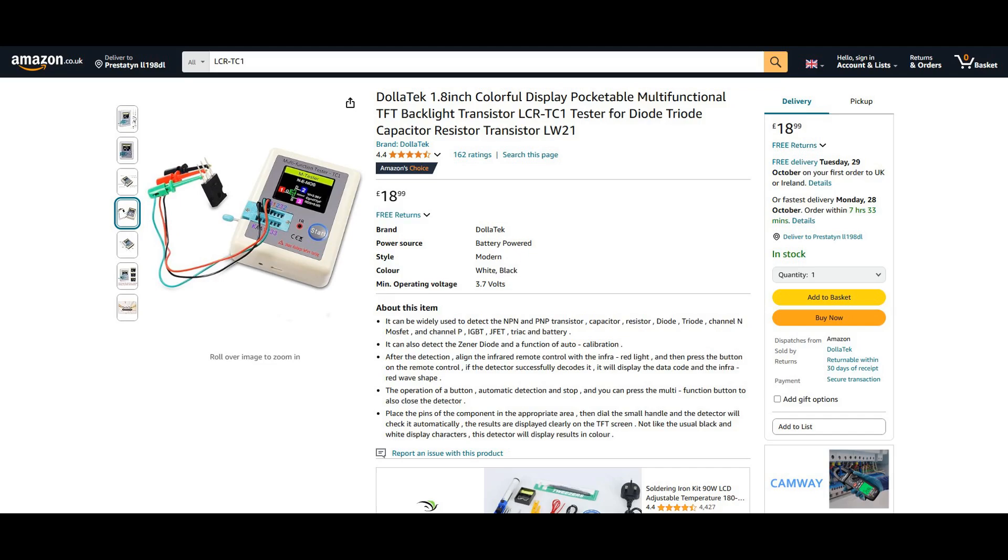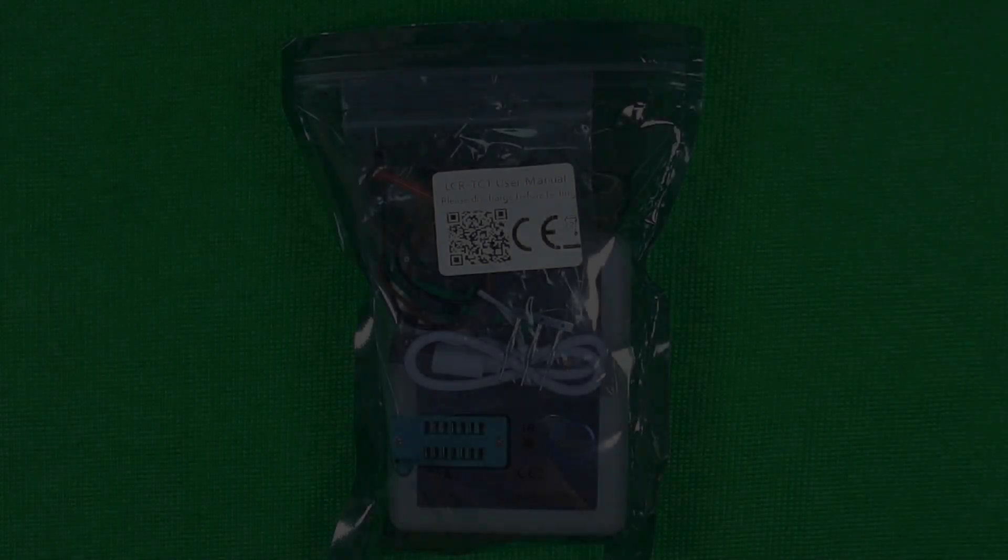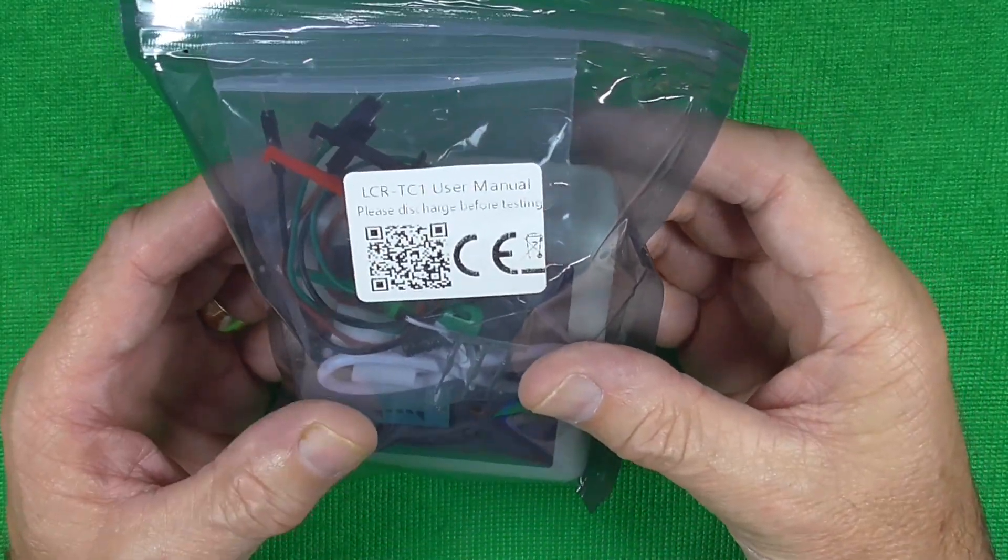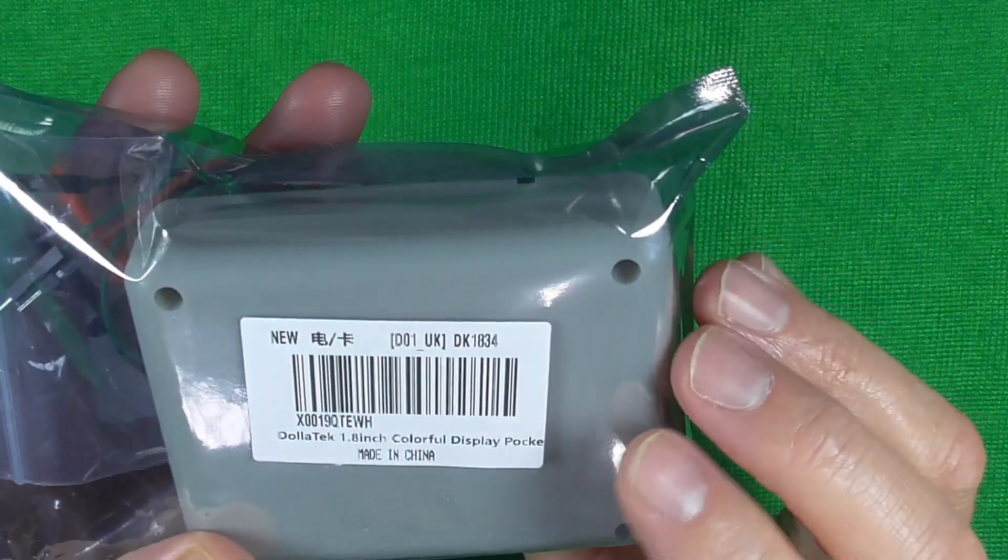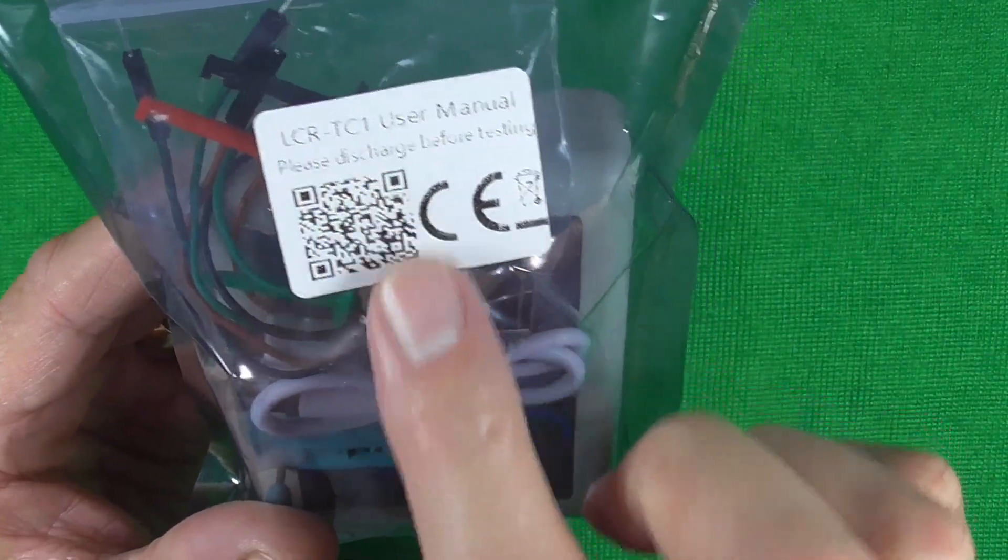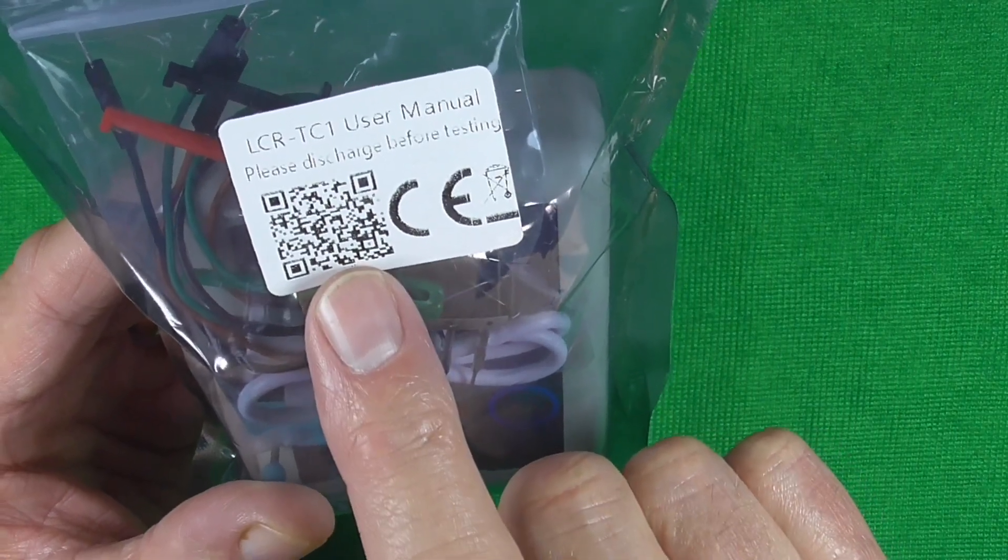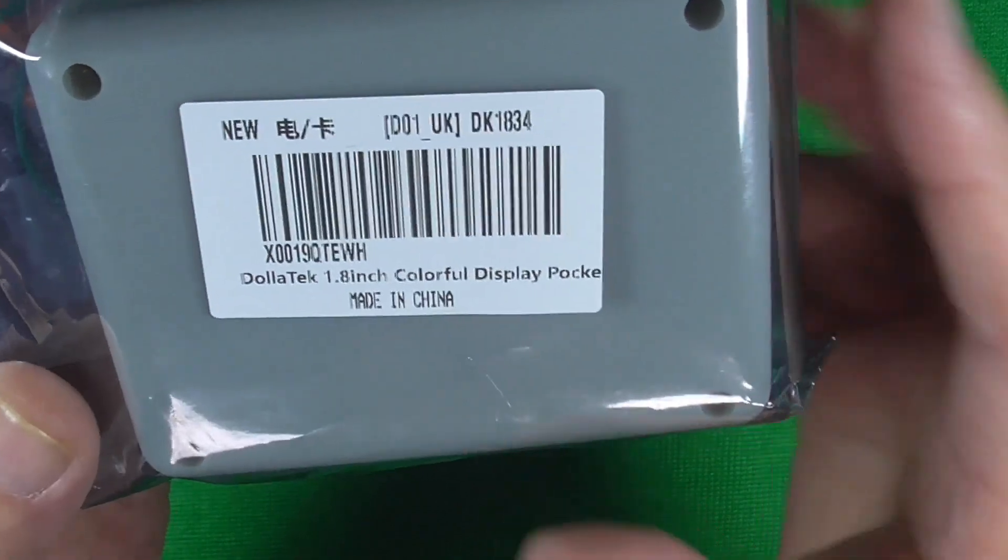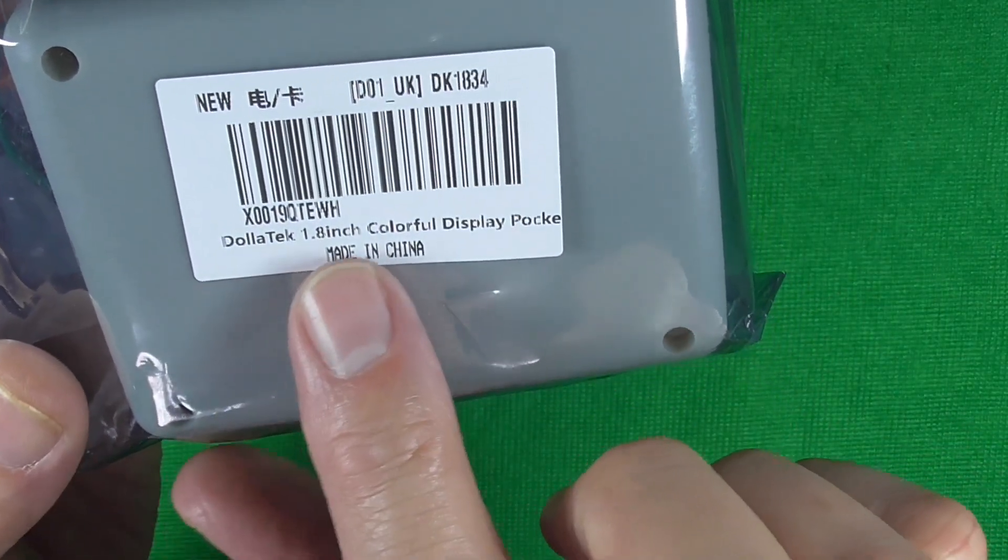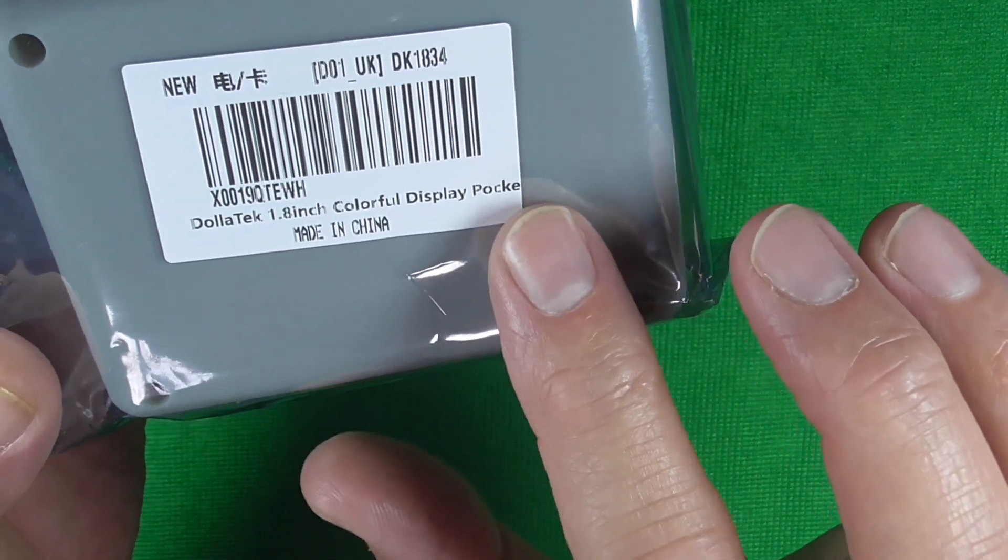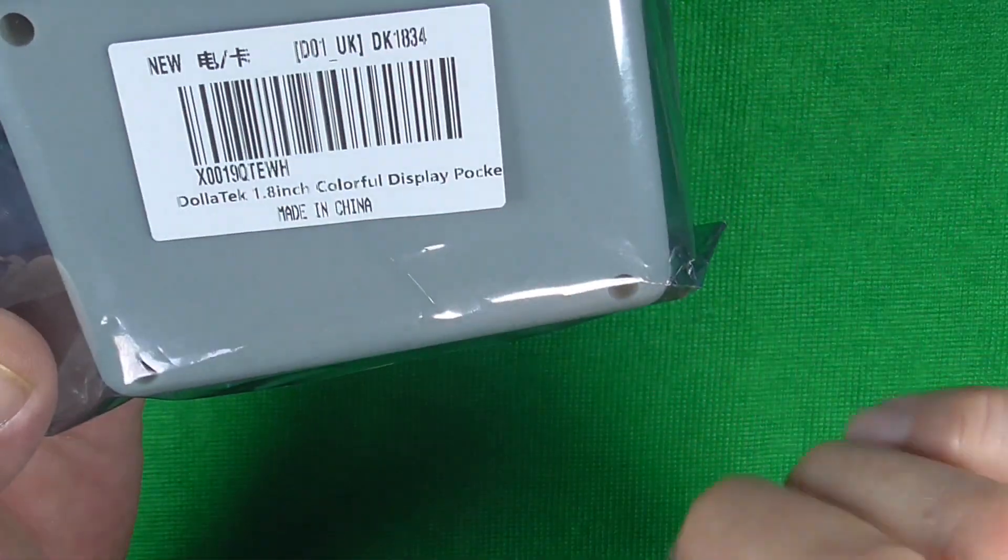So we'll get it out of the bag and see what we've got. It arrives in this anti-static bag. You've got a label on the top there, the model number, and the QR code for the user guide. And on the rear, we've just got a barcode with Dollar Tech, 1.8-inch colorful display, and I would imagine that was Pocket, made in China.